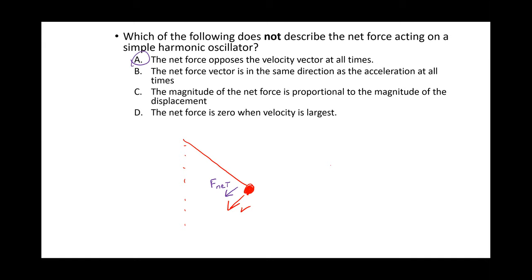Regarding the net force and velocity vector: the statement that the net force always opposes the velocity is incorrect. We can find a counter-example — a moment where the net force on the pendulum bob and its velocity point in the same direction. That proves the force sometimes acts in the same direction as velocity, meaning the pendulum is sometimes speeding up, not always slowing down.